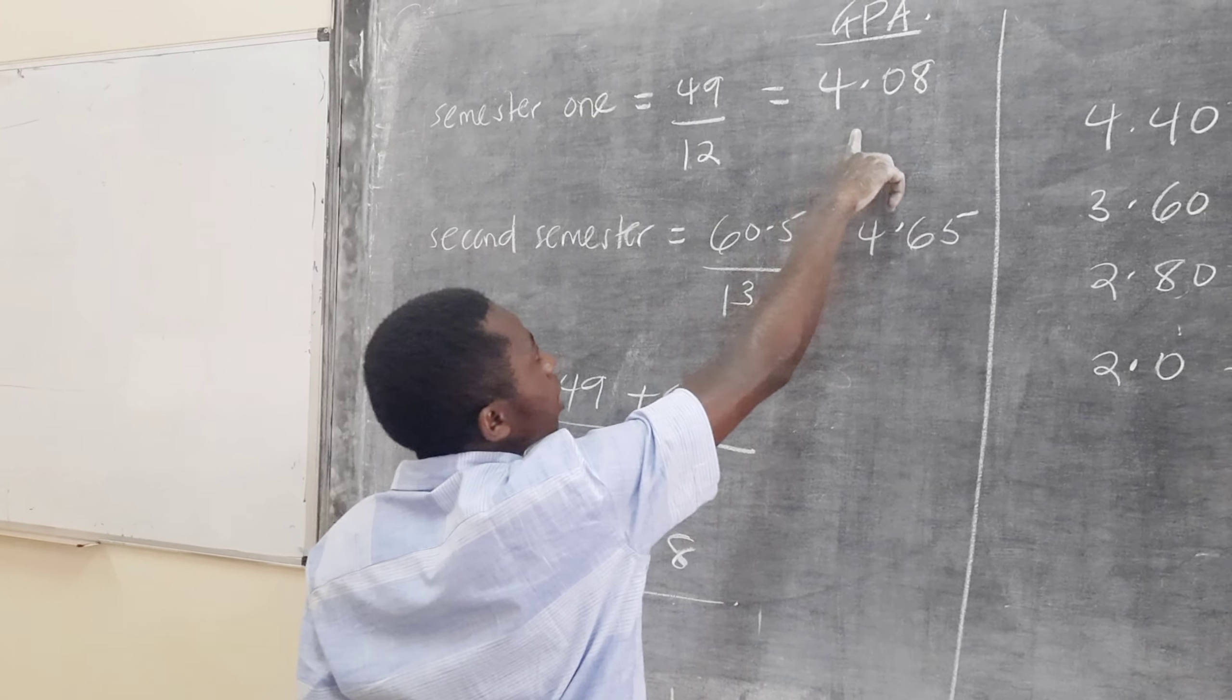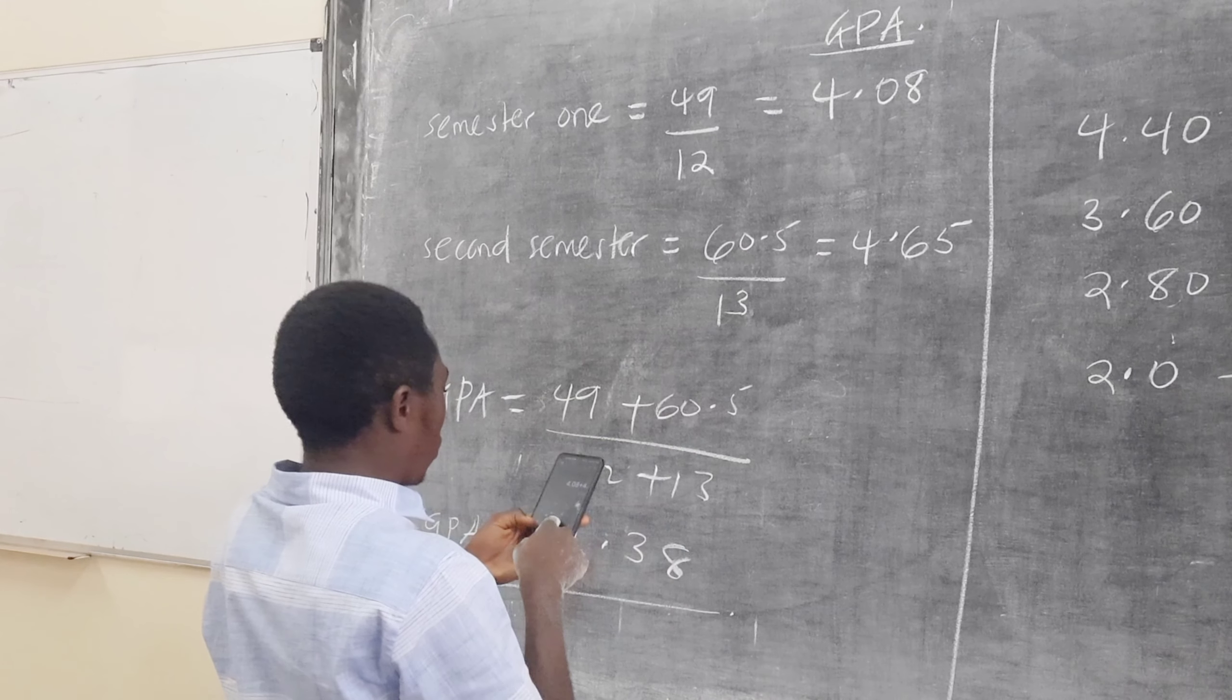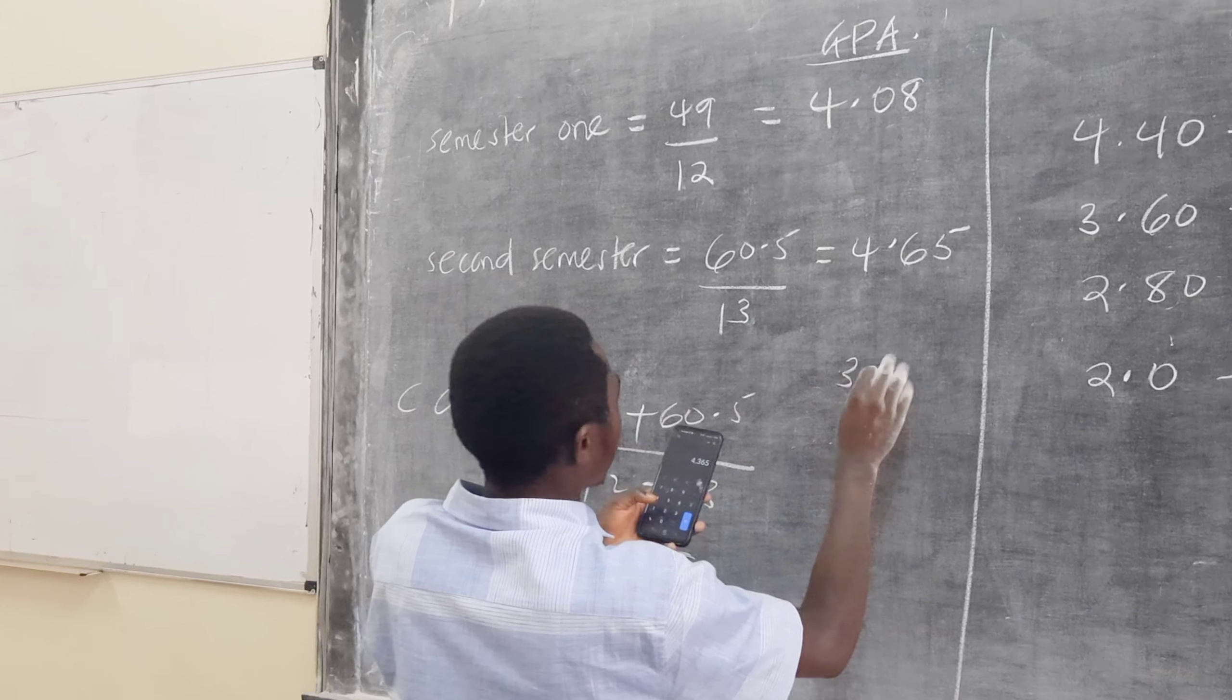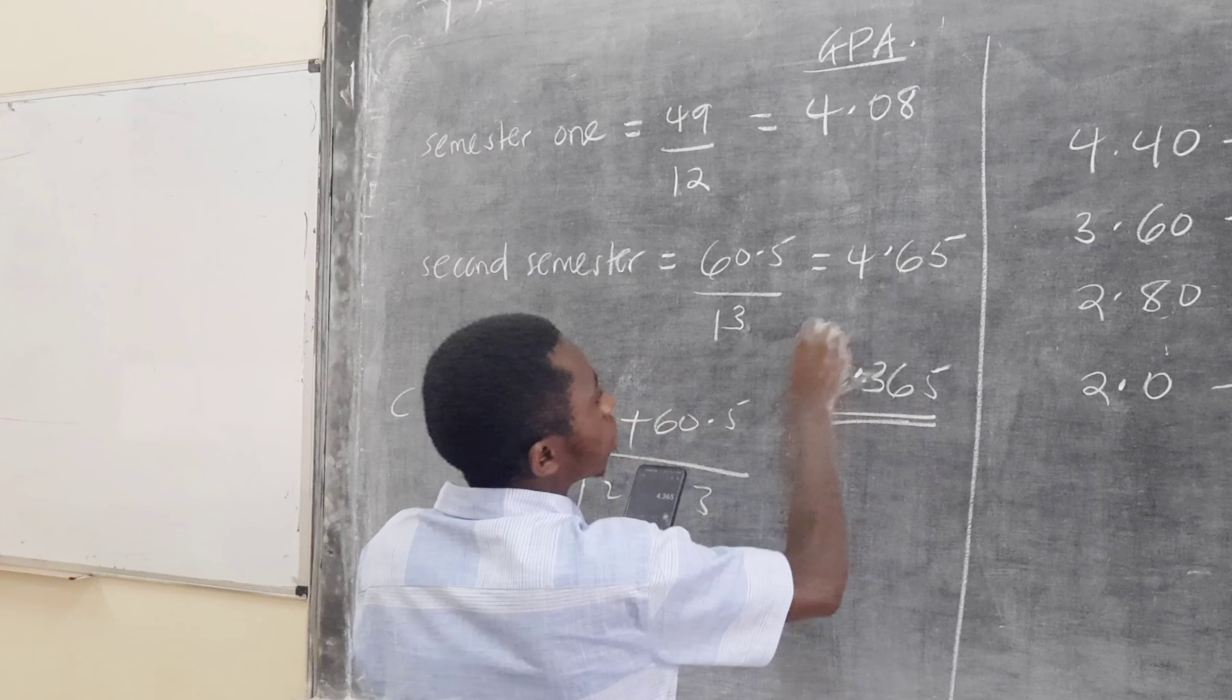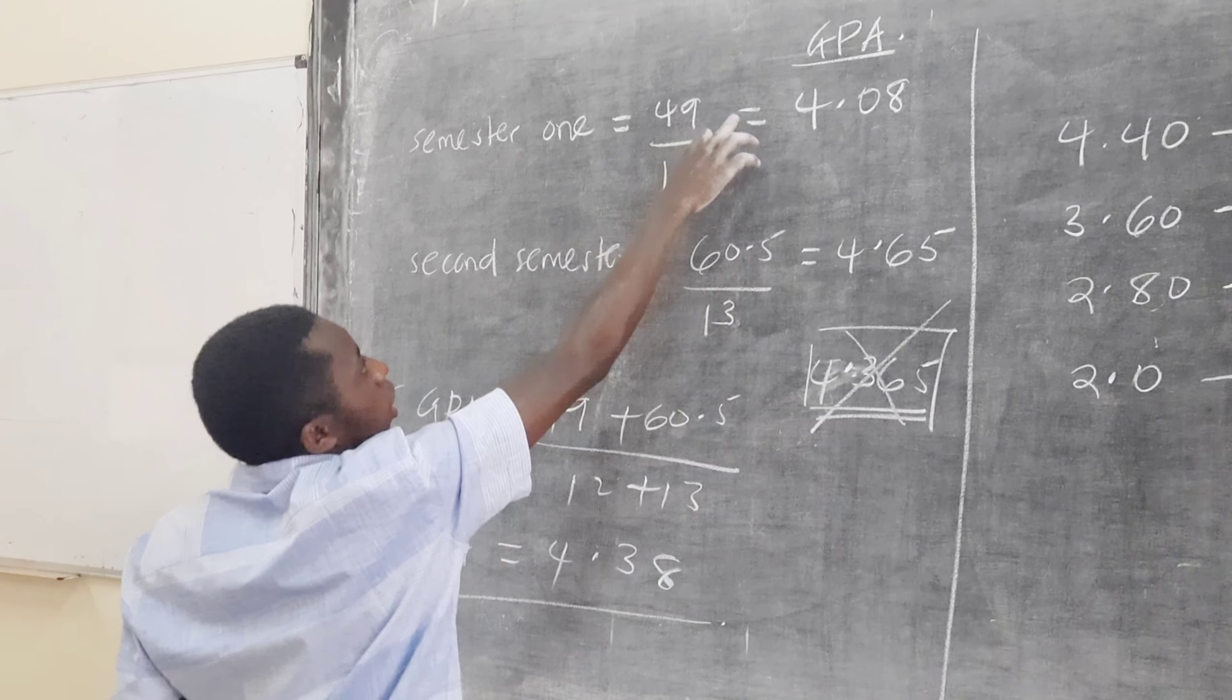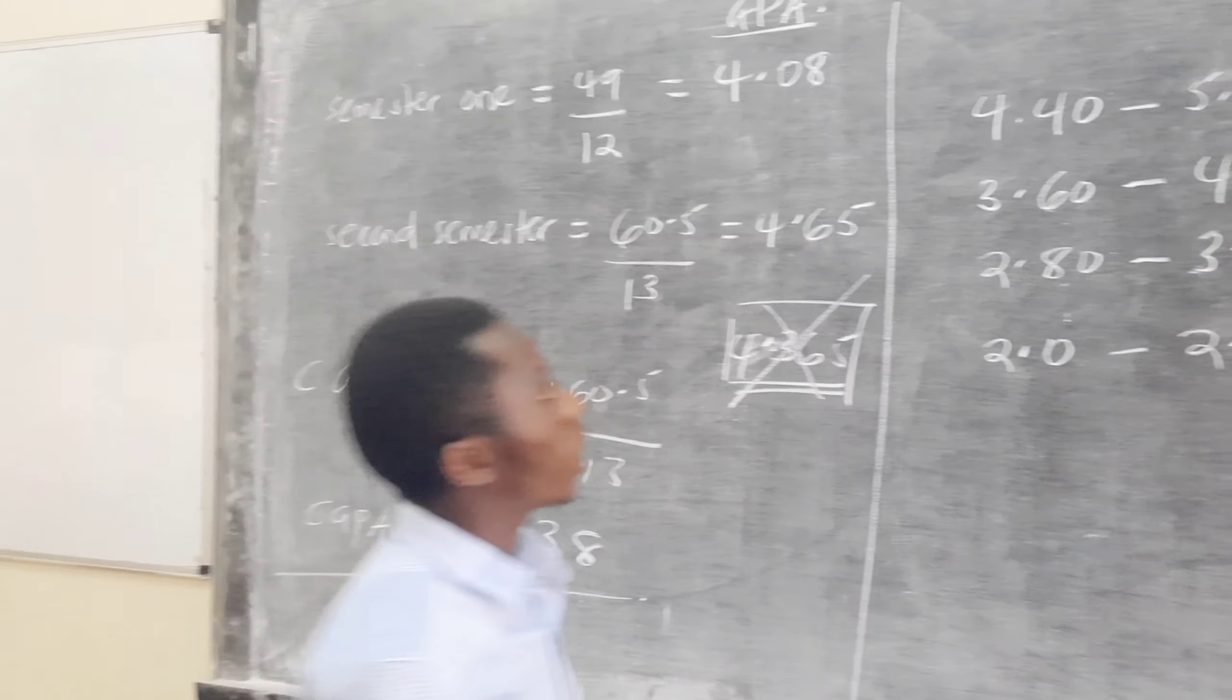That's why you can be able to get the CGPA. Imagine a student got 4.08 plus 4.65 divided by 2, which is a wrong CGPA. To get CGPA, you must come back to the total summations and you combine them back. This is where you come up with CGPA. Now, finally, let's look at the classes.